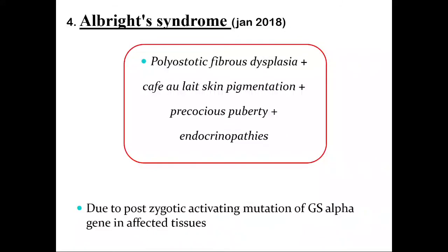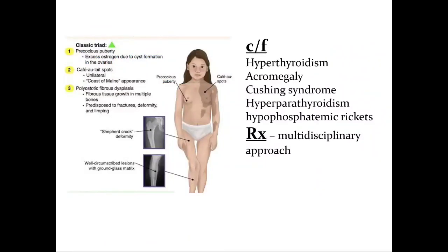McCune-Albright syndrome is a polyostotic fibrous dysplasia type with characteristics of café au lait skin pigmentation, precocious puberty, and endocrinopathies. It occurs due to mutation of the GS-alpha gene — the GNAS1 gene is affected. The classical triad is precocious puberty, café au lait spots, and polyostatic fibrous dysplasia. Treatment is a multidisciplinary approach.